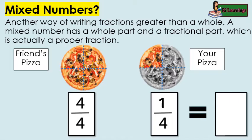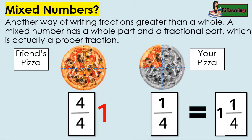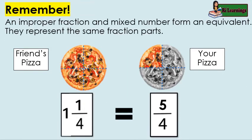Mixed numbers: another way of writing fractions greater than a whole. A mixed number has a whole part and a fractional part, which is actually a proper fraction. You and your friends ate one whole pizza and one fourth of a pizza. Since four fourths is equal to one, as a mixed fraction, we can write this as one and one fourths of a pizza. Remember, an improper fraction and a mixed number form an equivalent — they represent the same fraction parts.